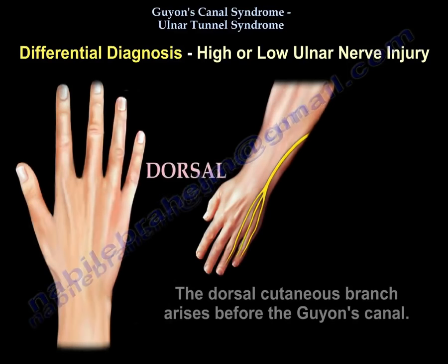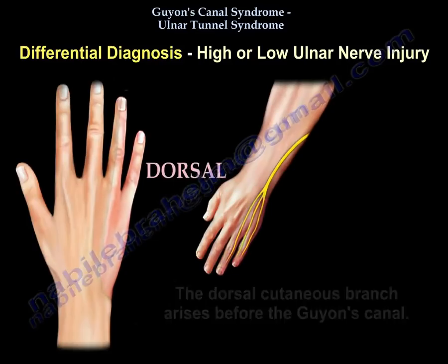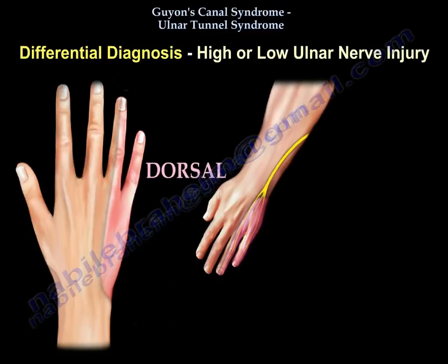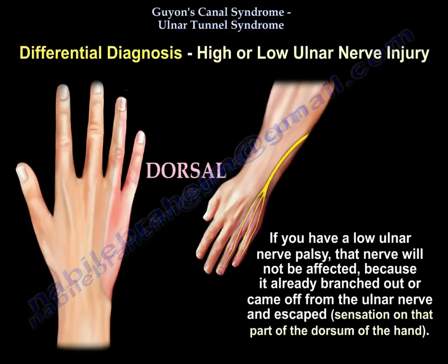The dorsal cutaneous branch of the ulnar nerve arises before Guyon's Canal. In high ulnar nerve palsy, there will be a sensory deficit on the dorsum of the hand because that nerve will be affected. In low ulnar nerve palsy, that nerve will not be affected because it has already branched off from the ulnar nerve, so sensation on the dorsum of the hand will be intact.